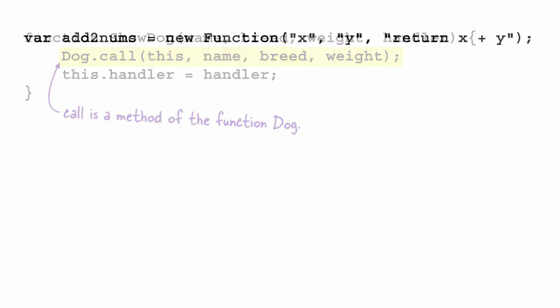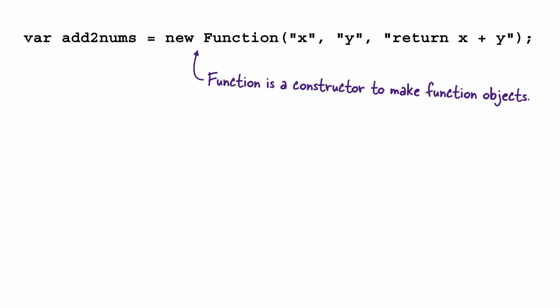To really test out the idea that a function is an object, let's make one using the function object's constructor function, which is Function with a capital F. Here, we're making a new function object named AddToNums by calling the constructor function with new and passing in three arguments. The first two arguments become the parameters of the resulting function.